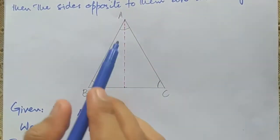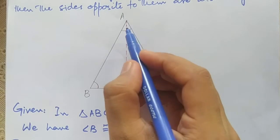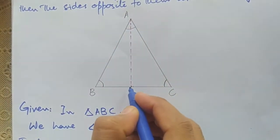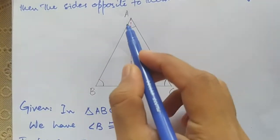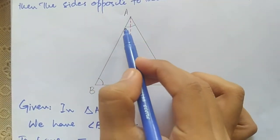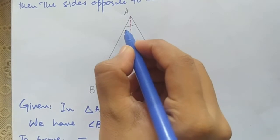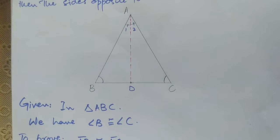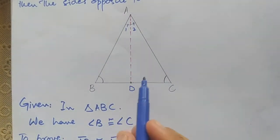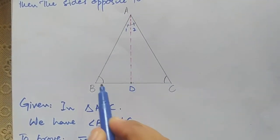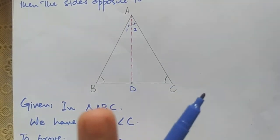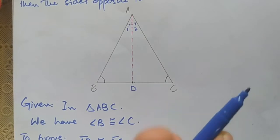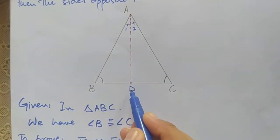Let me show this bisector as a dotted line. This angle bisector meets BC at point D, dividing angle A into angle 1 and angle 2, and these two angles are equal. Note that point D is not necessarily the midpoint of BC, because we have drawn an angle bisector, not a side bisector.